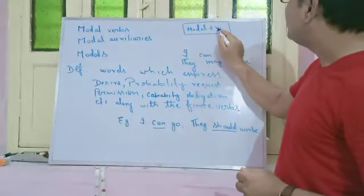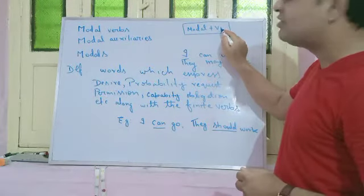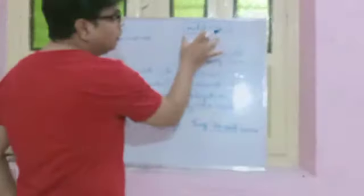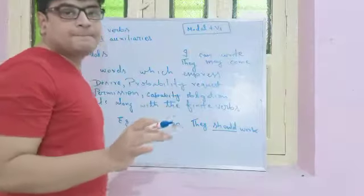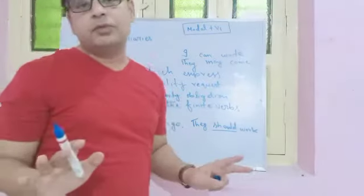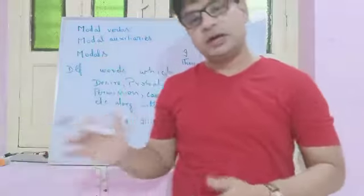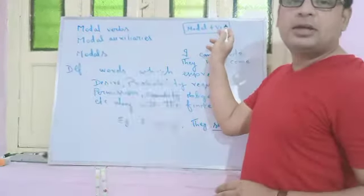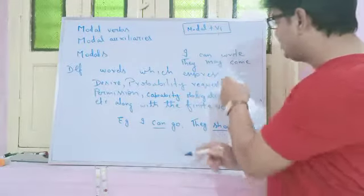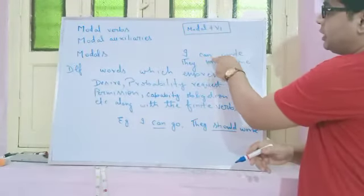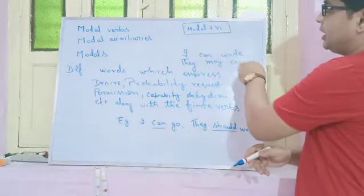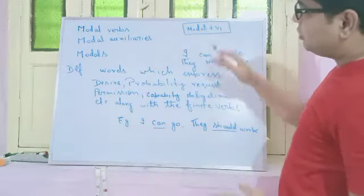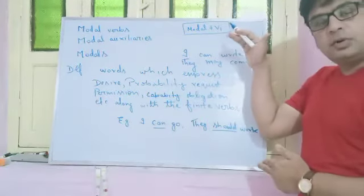One very important point: modal verbs always combine with the present and plural form of the verb, meaning V1. They will not come with V2, V3, V4, or V5 — only V1. For example, it can never be 'they may came' or 'I can wrote' or 'I can written' — that is always wrong.